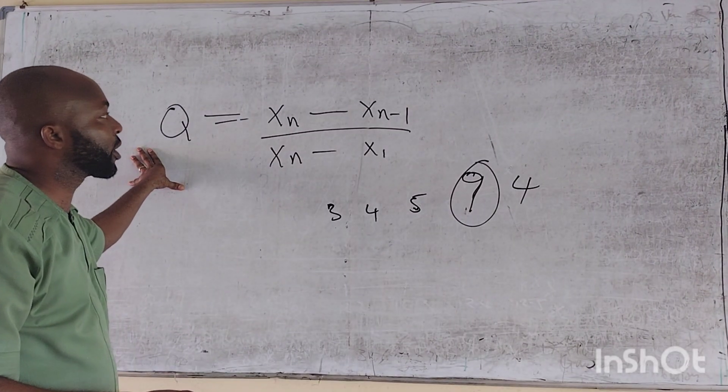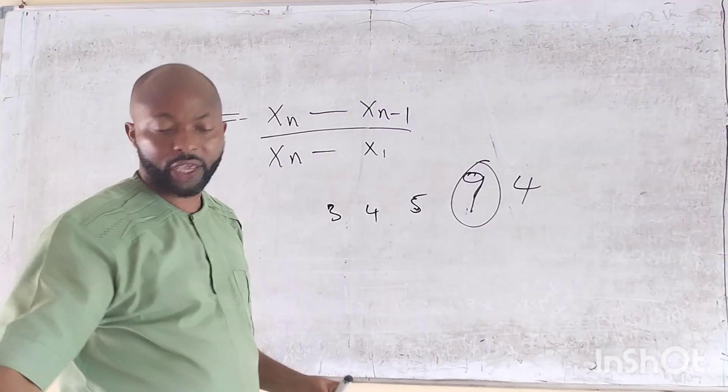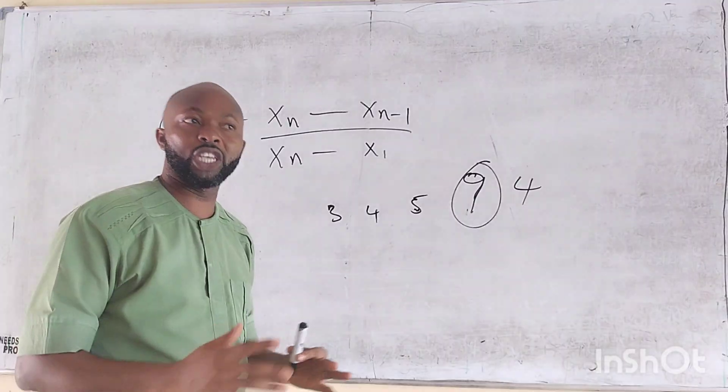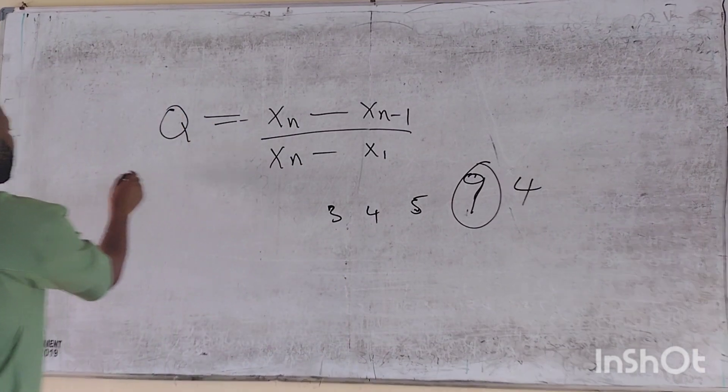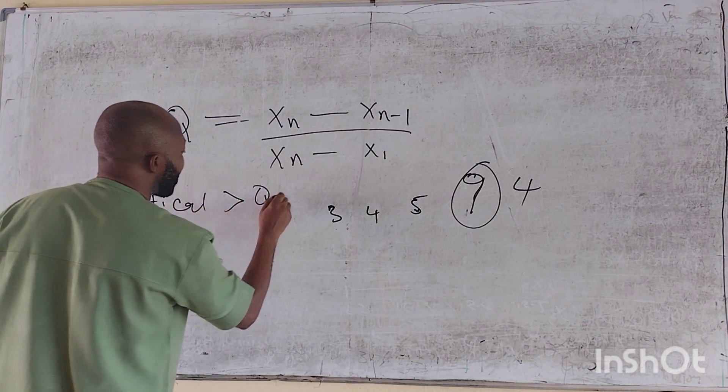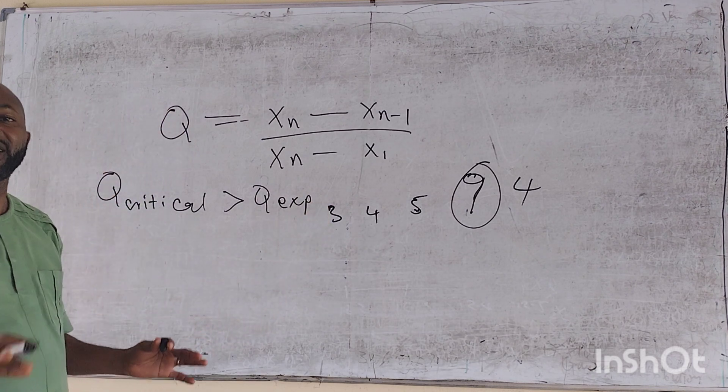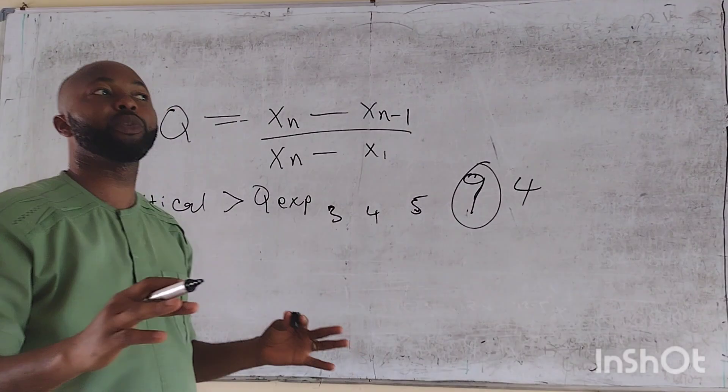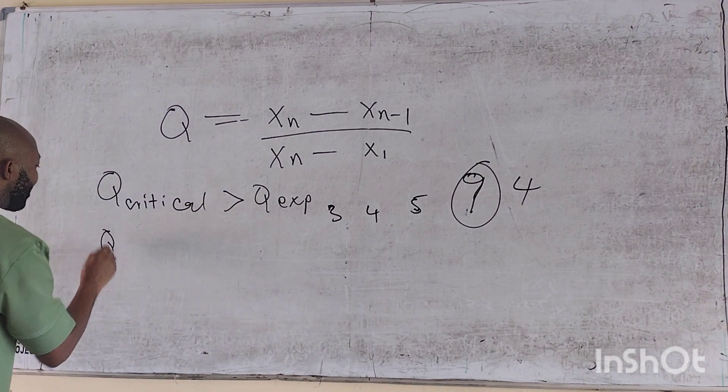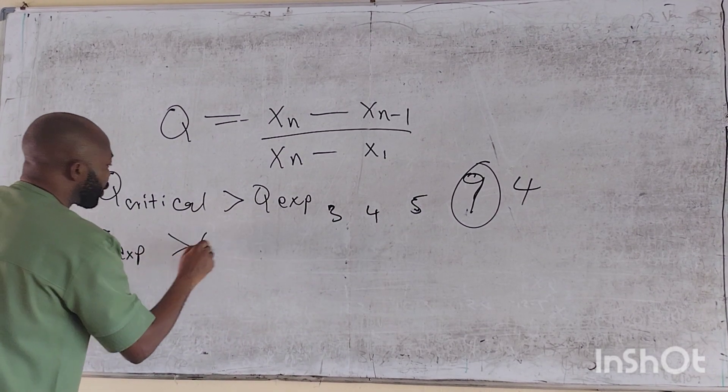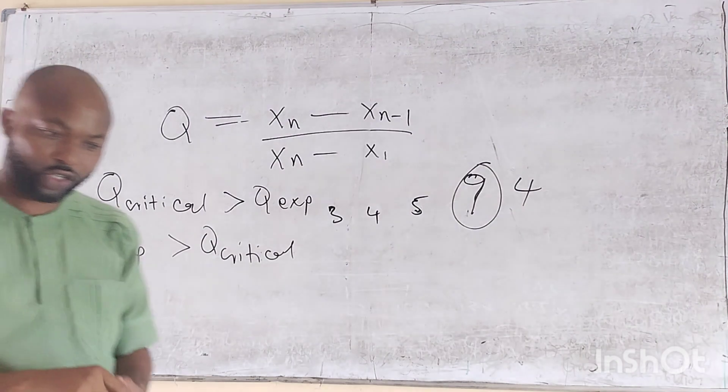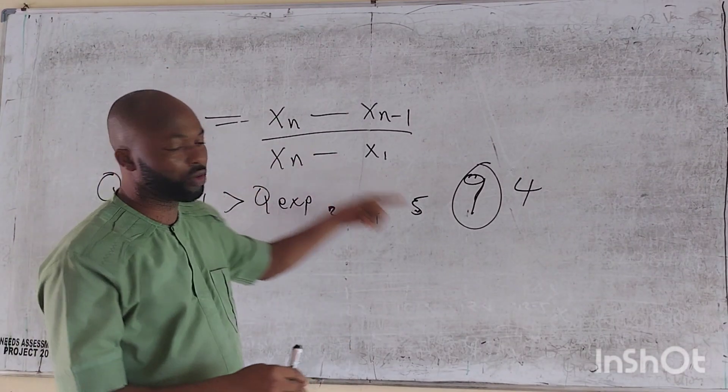Then we compare the Q experimenter with the Q-critical from the statistical table, which is given to all analytical chemists, to be able to check which of the variable is larger. And we say when the Q-critical is greater than Q-experimenter, we retain the questionable variable, which could be because of a random error. But when the Q-experimenter is greater than the Q-critical, we reject the variable.